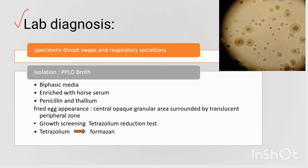Lab diagnosis is important in microbiology. Specimen collection is a common and easy procedure using respiratory secretions. Culture is done using PPLO broth complex, biphasic media, solid agar, and liquid broth, with enrichment using horse serum to avoid growth of unwanted organisms. As a result, we get a fried egg appearance — a granular opacity in the center surrounded by a translucent peripheral zone.